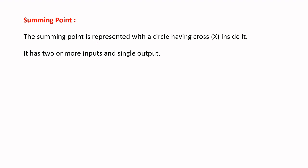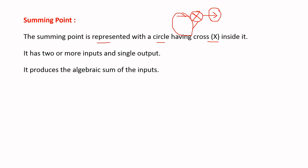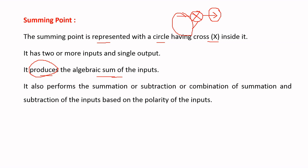Coming to the second element in the block diagram — the summing point: the summing point is always represented by a circle with a cross mark inside it. The summing point has two or more inputs and only one output. The output is the algebraic sum of the inputs. Using a summing point we can perform summation, subtraction, or a combination of both, based on the polarity of the inputs.